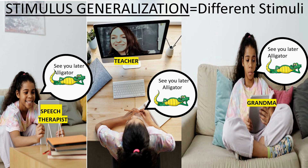Here is an example of stimulus generalization. The speech therapist is stimulus number one, the teacher is stimulus number two, and grandma is stimulus number three. Different stimuli, and one response of her saying 'see you later alligator.' Remember, stimuli could be anything in the environment — different people, different items, different things. Anything in the environment would be considered stimuli.